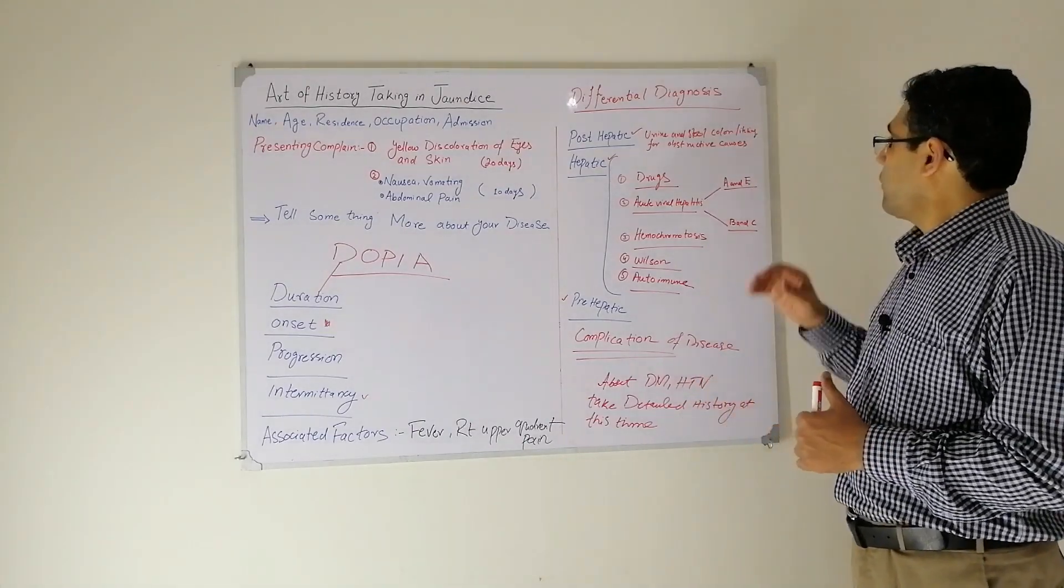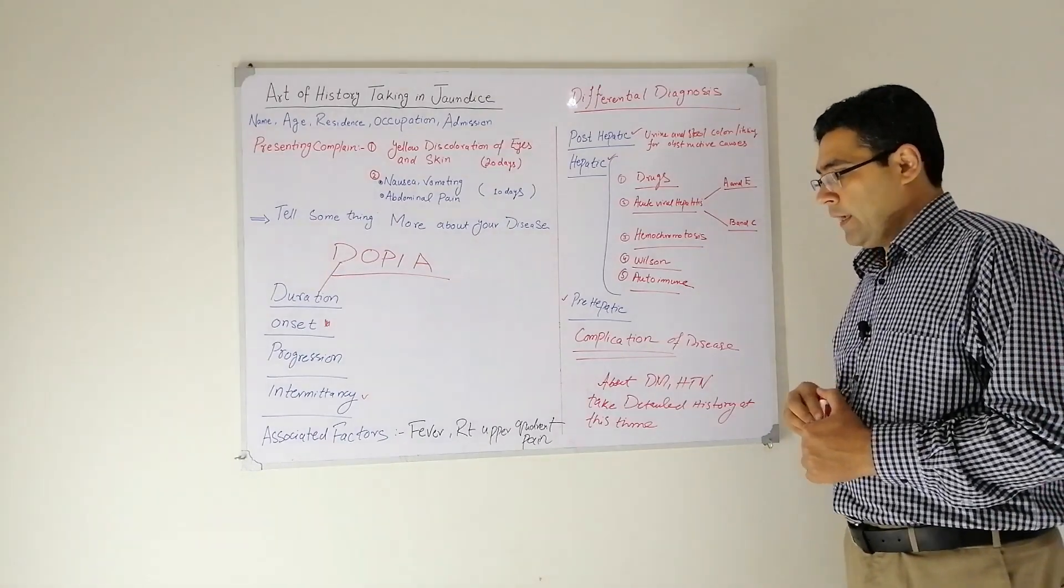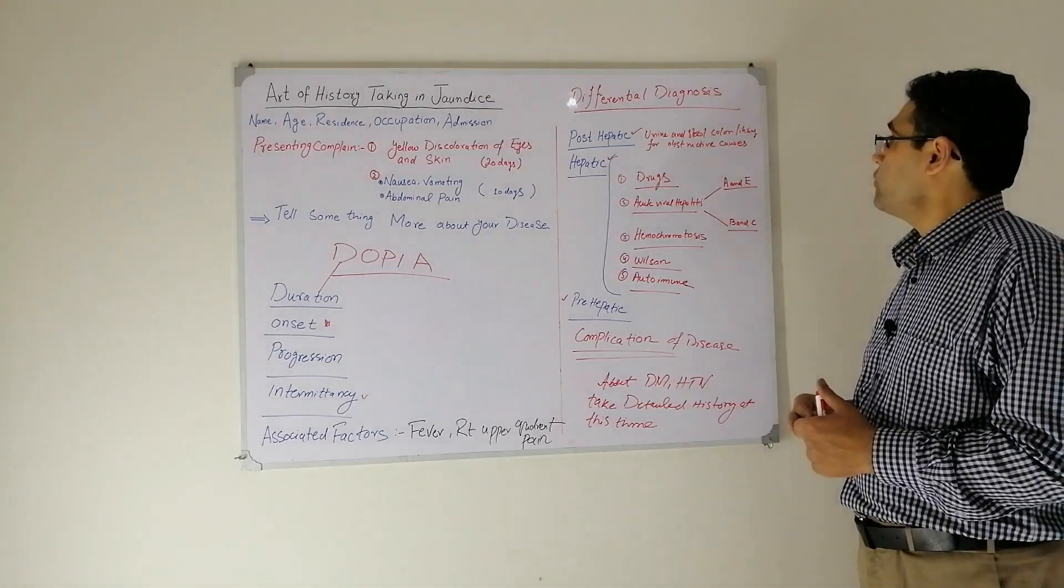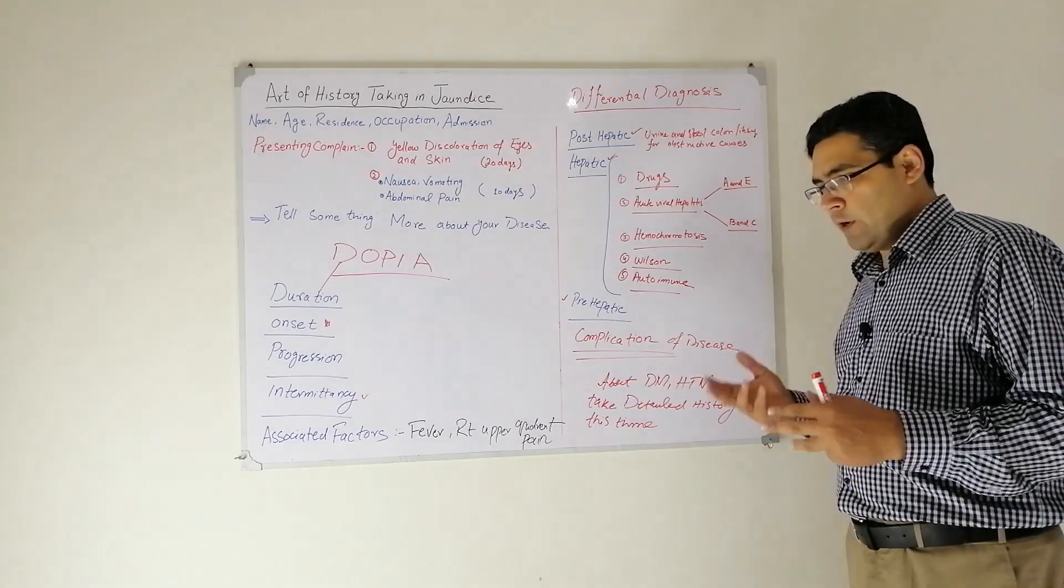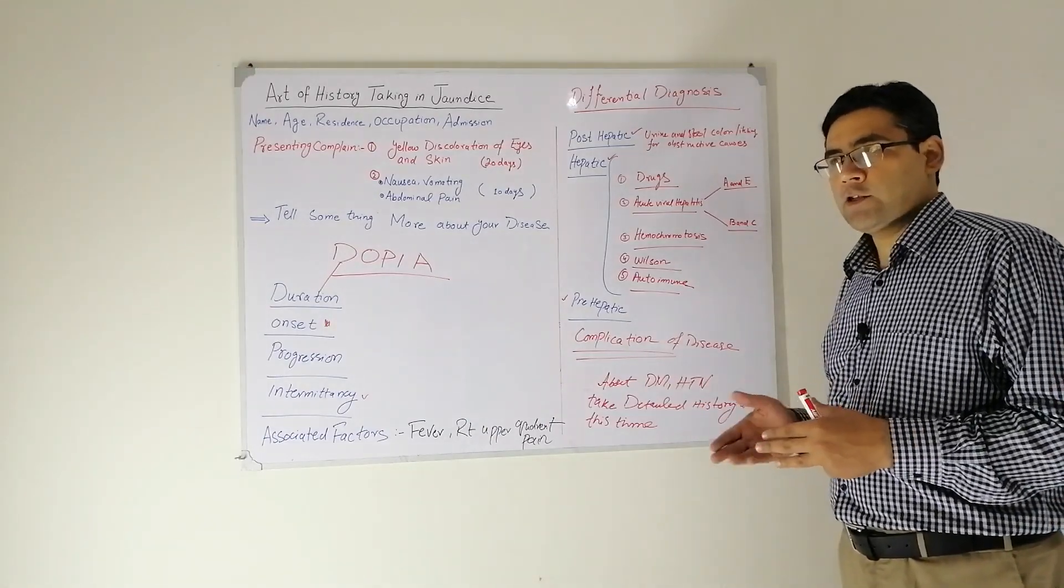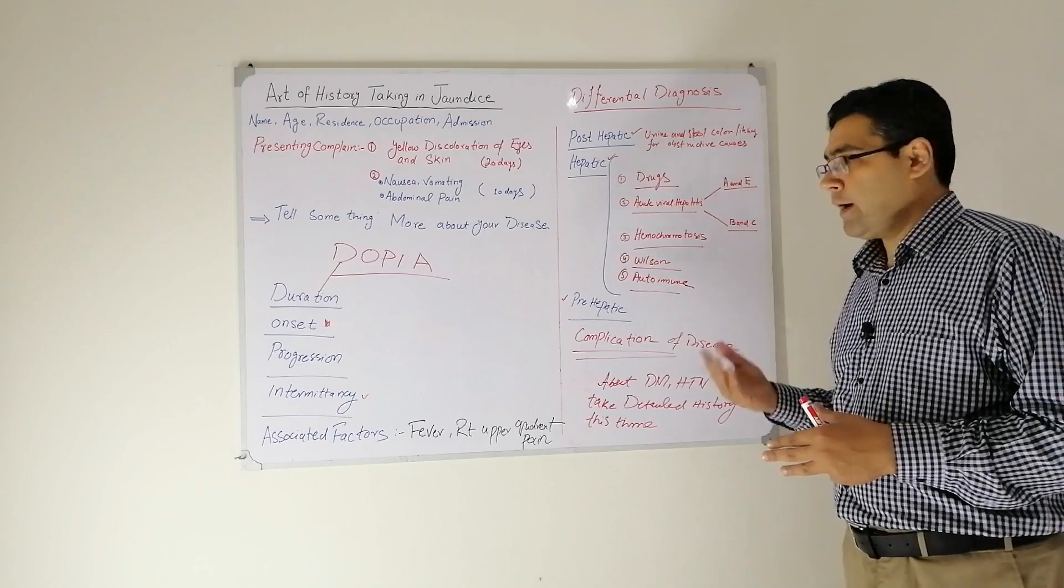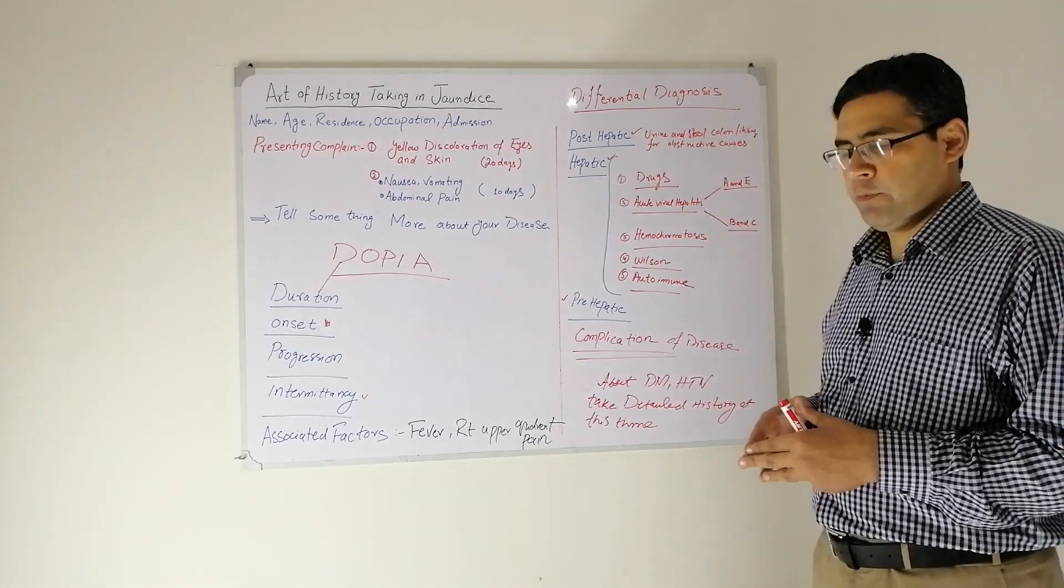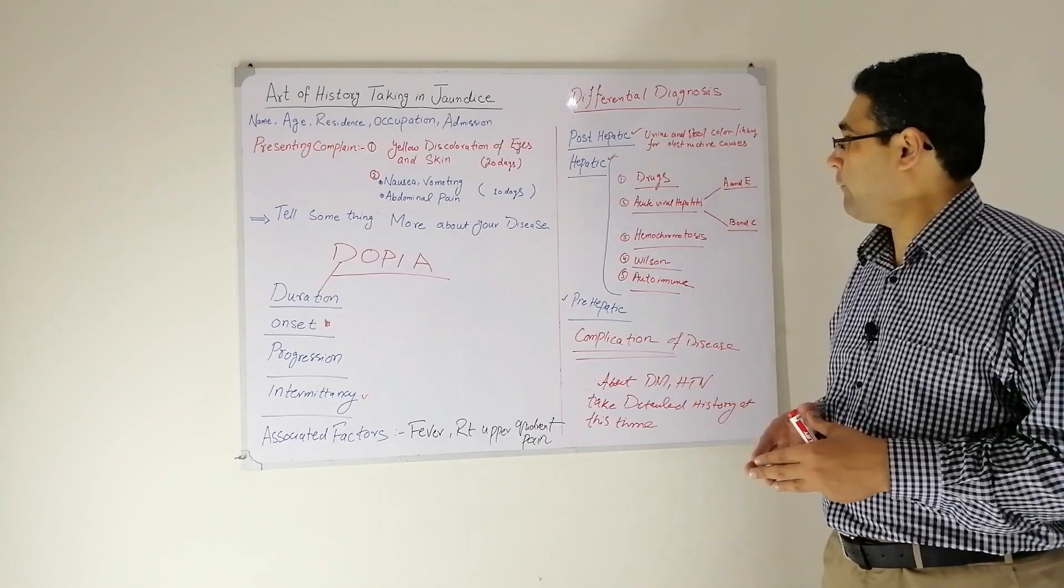First, ask about the urine and stool color and also ask about itching. If the patient gives you the clue that he has changed the color of his urine and stool, you will ask if there is any history of weight loss, because in post-hepatic causes the patient may have malignancy like carcinoma head of pancreas or periampullary carcinomas.